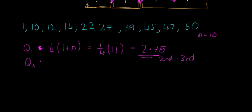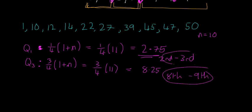And then I'll just go through Q3 as well. It's going to be pretty much the same. It's 3/4 times (1 plus N). So those are formulas you have to learn off. I don't think they're in the tables book. So in this case, it's 3/4 times 11, which in our case is equal to 8.25. So we have to get the average between the 8th and the 9th to find our Q3.